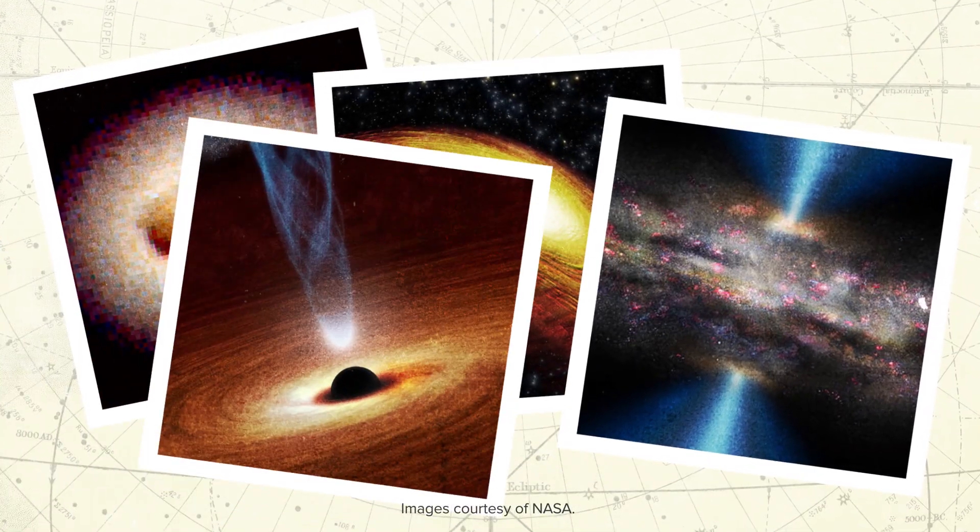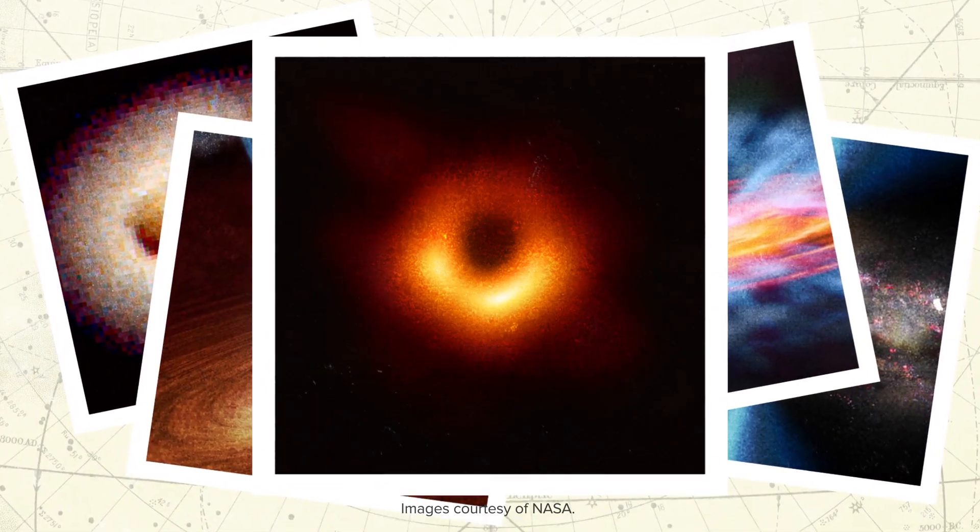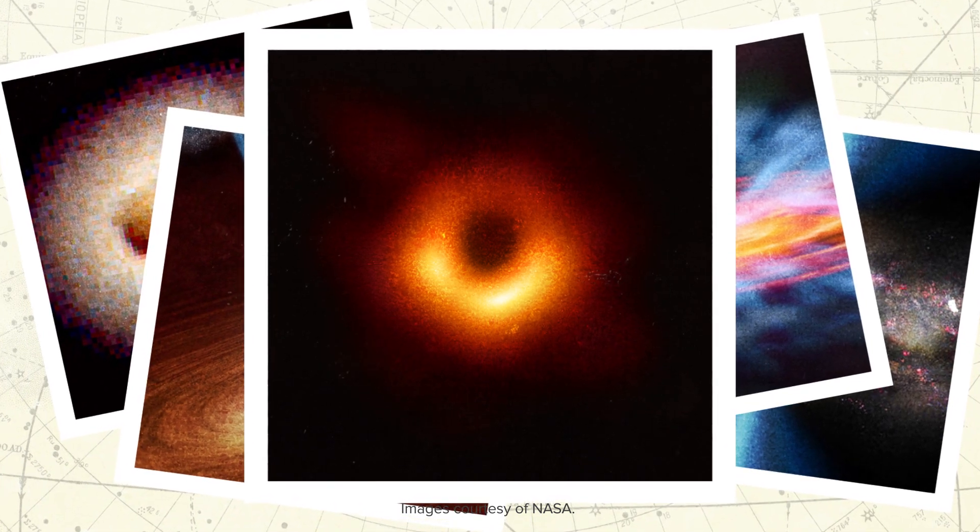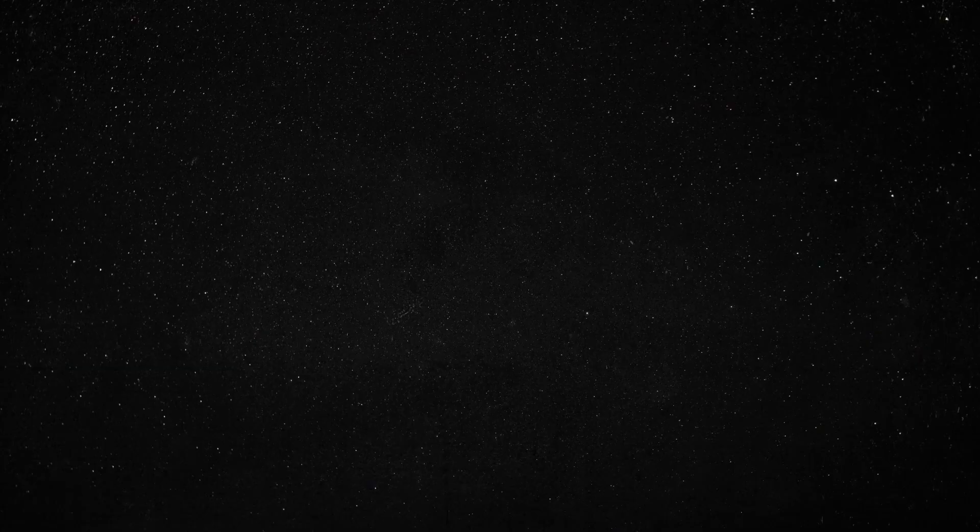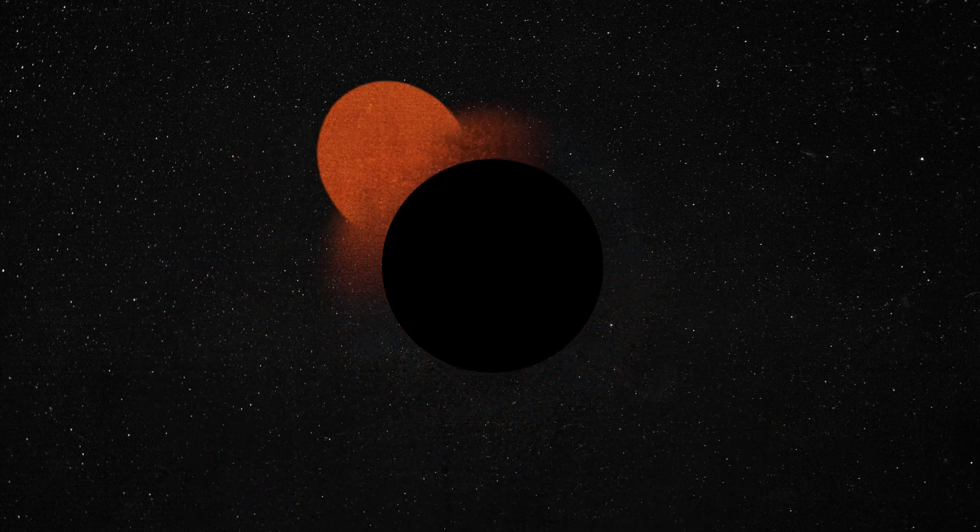Black holes have been kind of a big deal ever since the first photo of a supermassive black hole was taken in 2019. Black holes are exceptionally hard to find because they don't emit any light. To pinpoint where they are, you look at how nearby stars interact with them and measure the X-ray activity.